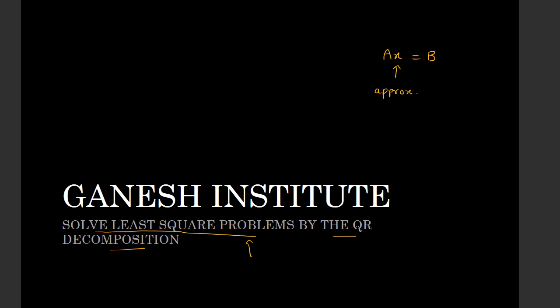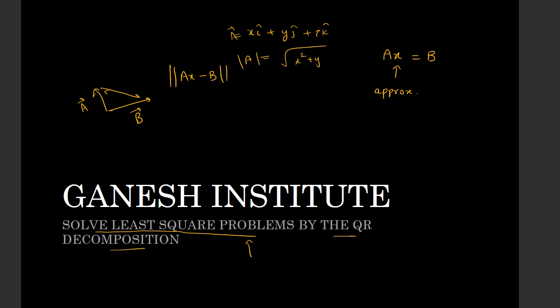What we mean by this is: let's say there are two vectors, vector a and vector b, and we want to find out the distance between them. We usually compute the modulus of Ax minus b. If we have a matrix and vectors x_i, y_j, z_k, the modulus is the square root of x² + y² + z². Similarly, we compute Ax minus b and find the modulus — that least distance is the core of solving least squares problems. Because we are using QR decomposition, please check out my separate video on that topic.